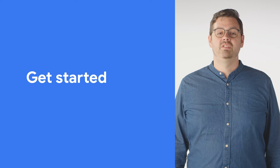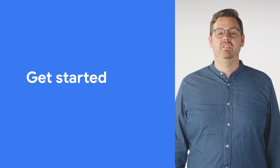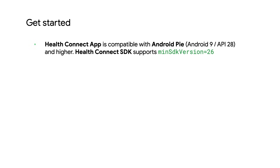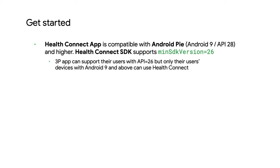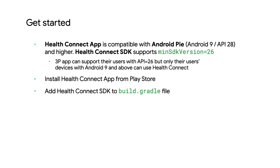In this section, we'll review how to get started integrating HealthConnect into your app. Users will need a relatively modern version of Android, and your app will need to have a min SDK set to 26. HealthConnect itself requires at least API level 28. You'll want to make sure that you have HealthConnect installed. Next, add the HealthConnect SDK dependency to your build.gradle file.